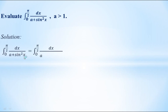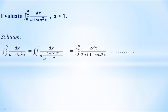The integral from 0 to π/2 of dx divided by (a + sin²x) equals the integral from 0 to π/2 of dx divided by (a + sin²x), where we substitute sin²x = (1 − cos 2x) / 2. Taking the LCM in the denominator, we get (2a + 1 − cos 2x) / 2, and this 2 goes to the numerator.